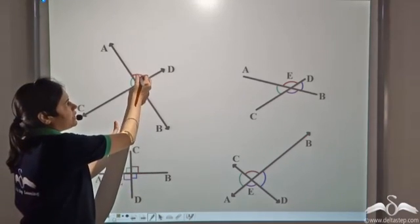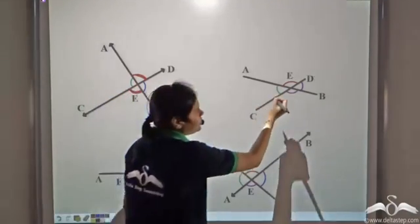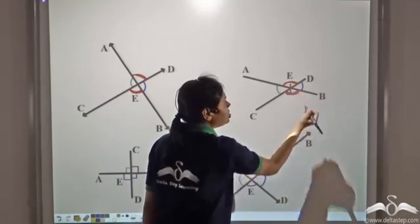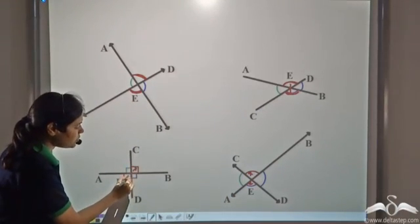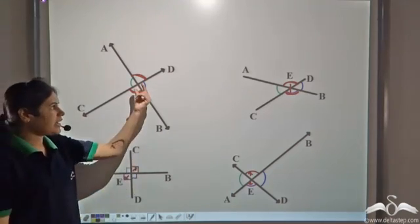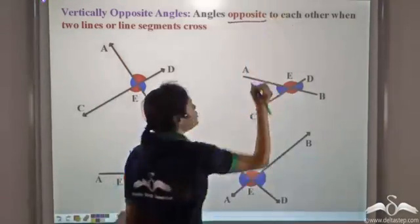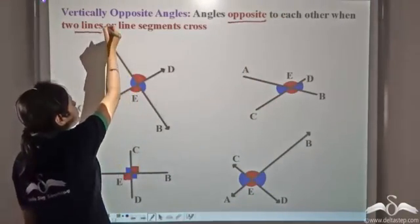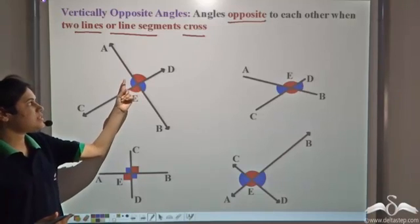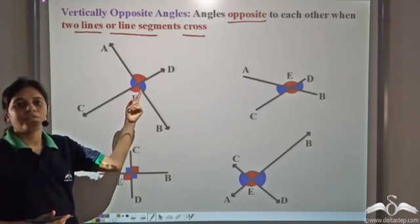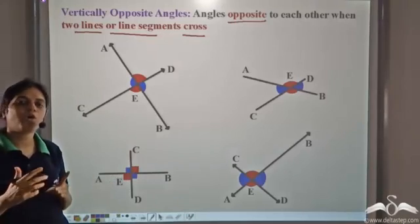Now if you see, this angle is opposite to this angle. This angle is opposite to this angle. This angle is opposite to this angle. This angle is opposite to this angle. Such angles are called vertically opposite angles — the angles which are opposite to each other when two lines or two line segments cross. Vertically opposite angles are the angles which are formed by the same arms but on the opposite sides.